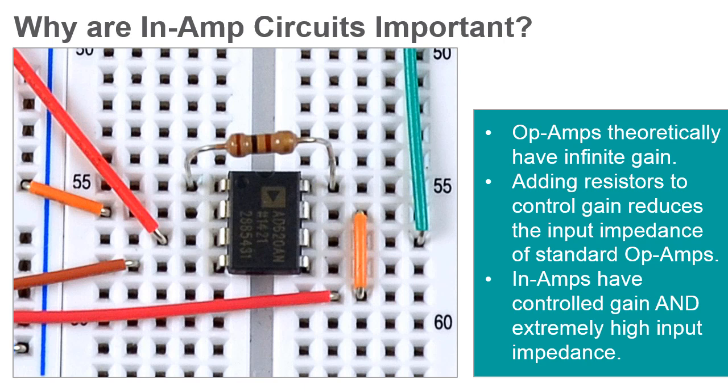This allows the in-amp to be used as a differential amplifier and employ common mode noise rejection to reduce the noise common on both inputs of the amplifier before the signals are amplified.